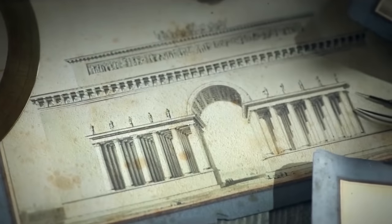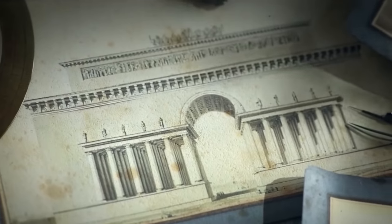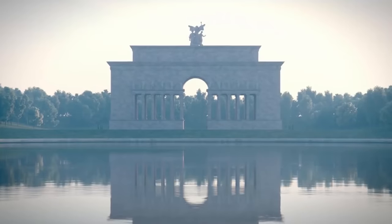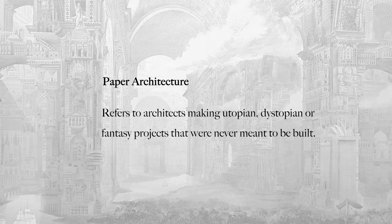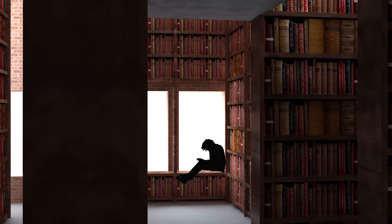Although this building would never get built, I think Boulee created poetry through his architecture and really expressed what it means to be a human in this world. We actually have a name for these types of projects — projects that are never meant to be built. It's called paper architecture. Let me know if you have a favorite unbuilt project. And if you want to check out my paper architecture, I'll leave the playlist right here.